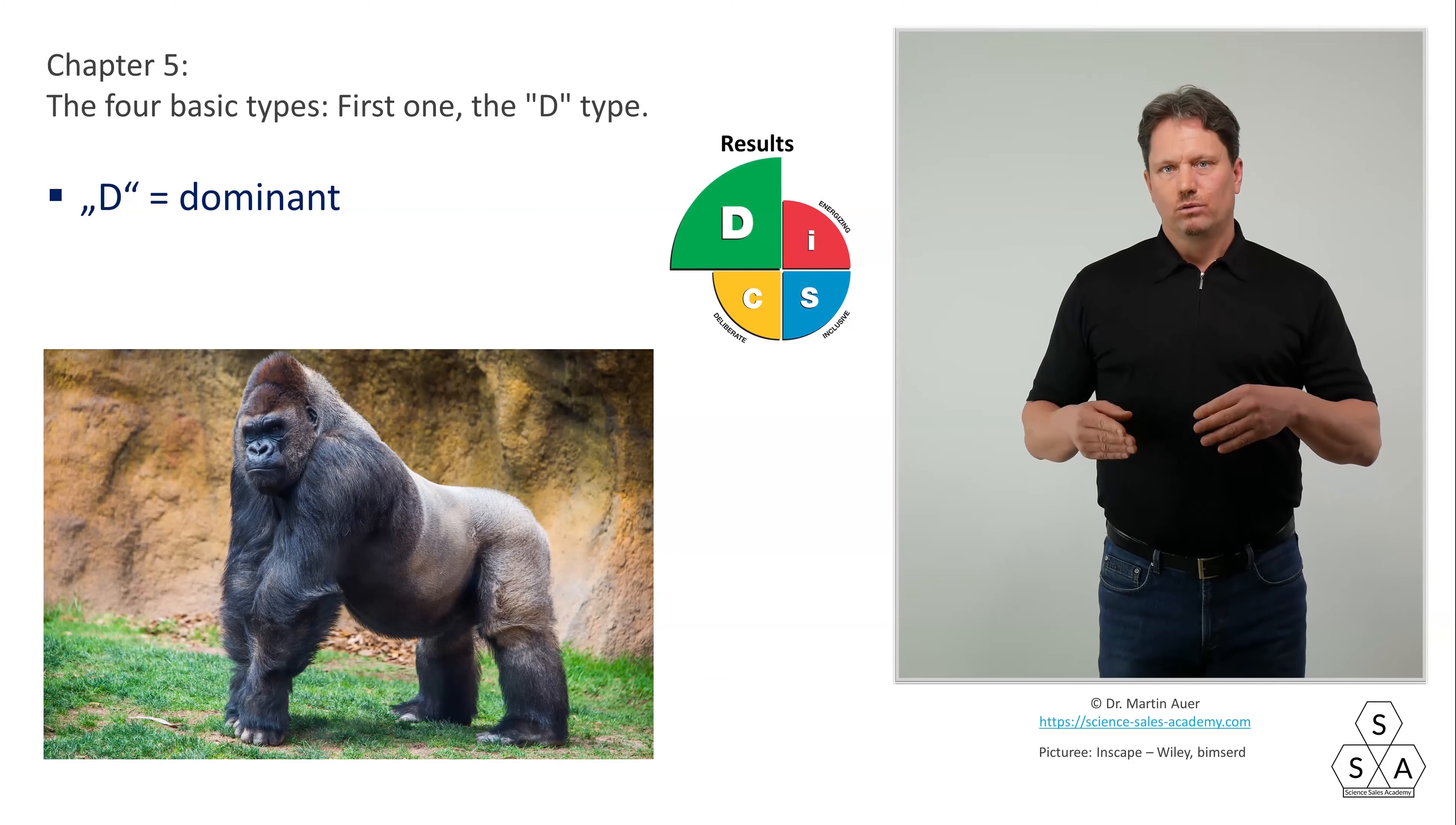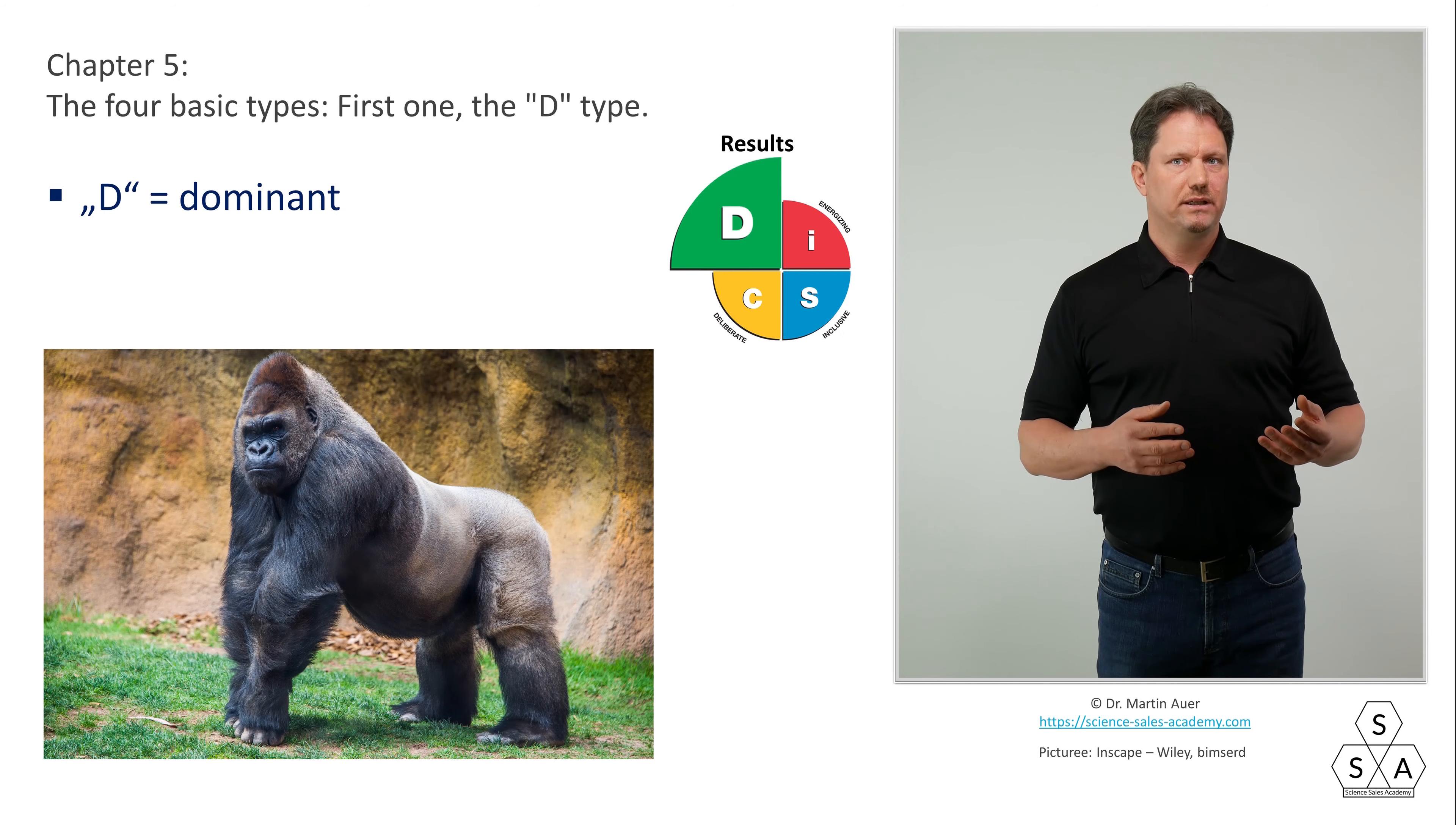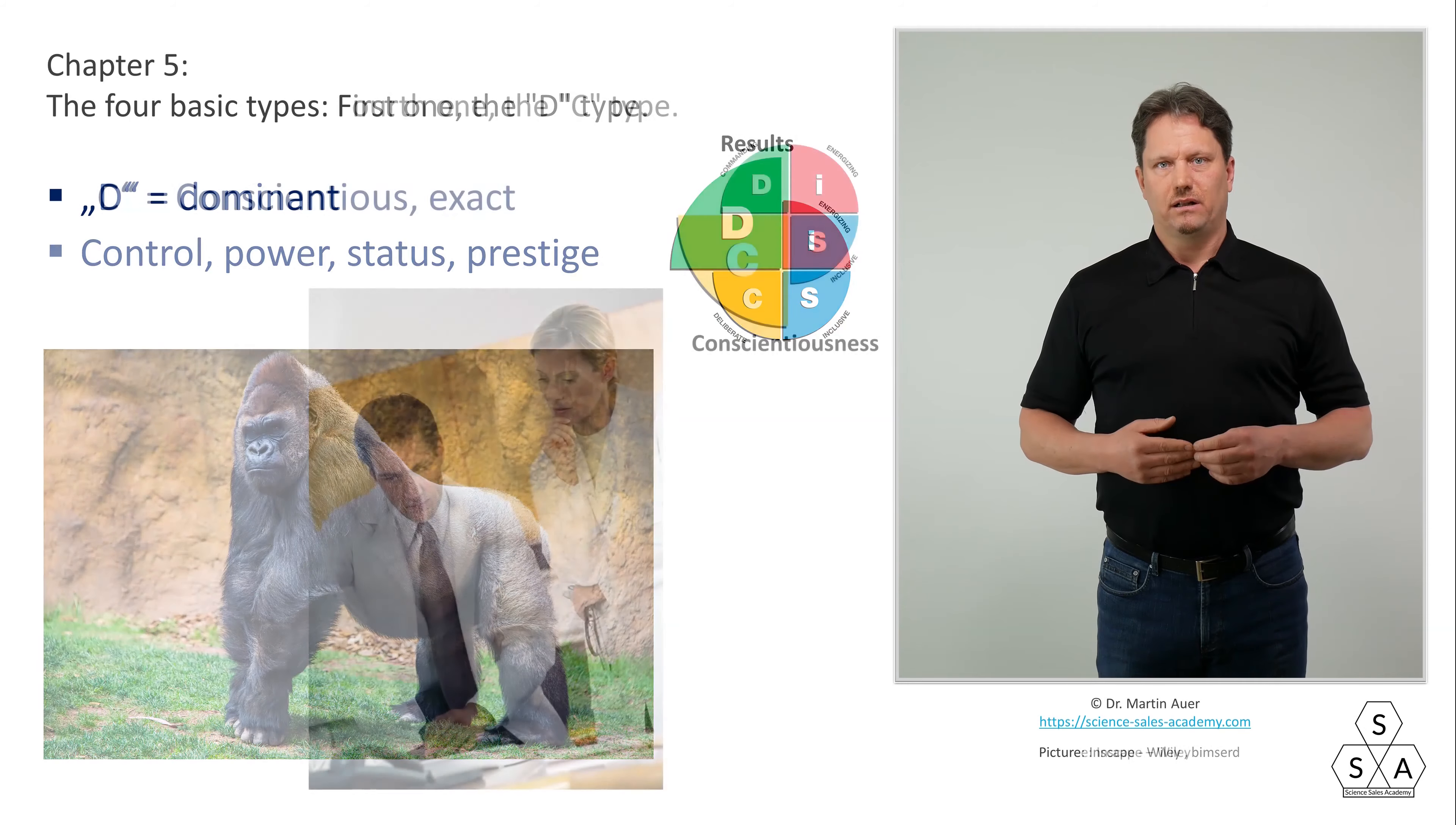Incidentally, when using this Wiley DISC typology in daily business, it may help to visualize the 4 basic types more vividly. The D-type, the dominant type, is very much like the silverback gorilla who is simply the boss of his group, who always keeps a little personal distance, may be adorned with a pretty female at his side, but otherwise figuratively sitting on a small hill observing and controlling events within his group. Control, power, status and prestige are the keywords here in this D-type area. For me personally, such an image of the silverback gorilla is quite vivid and practical.